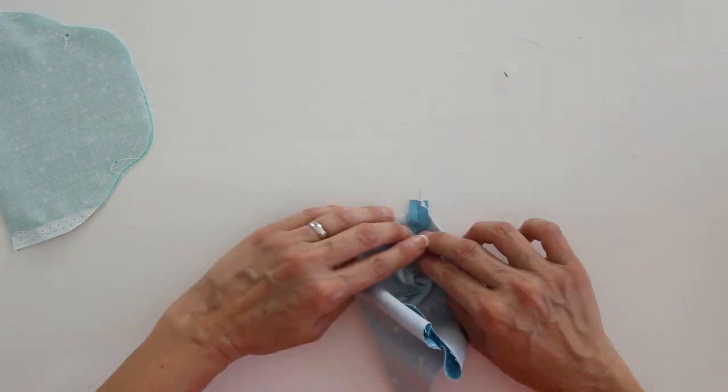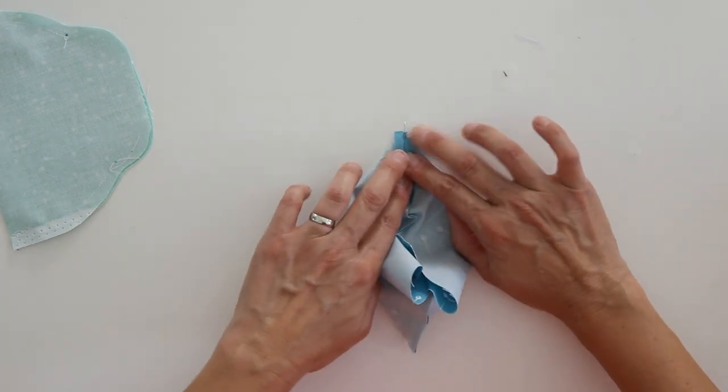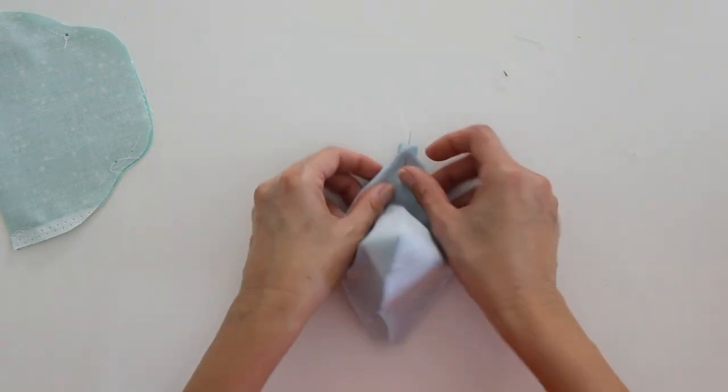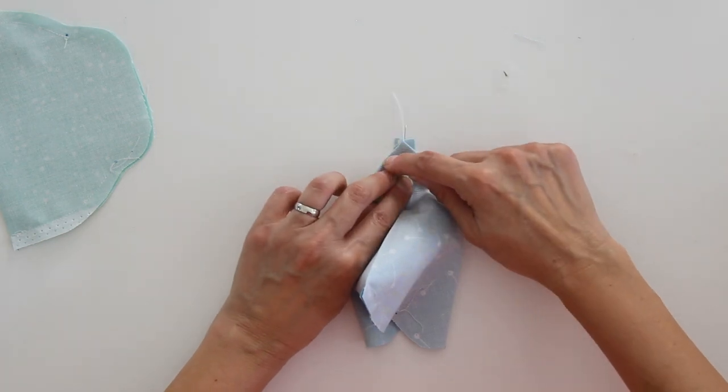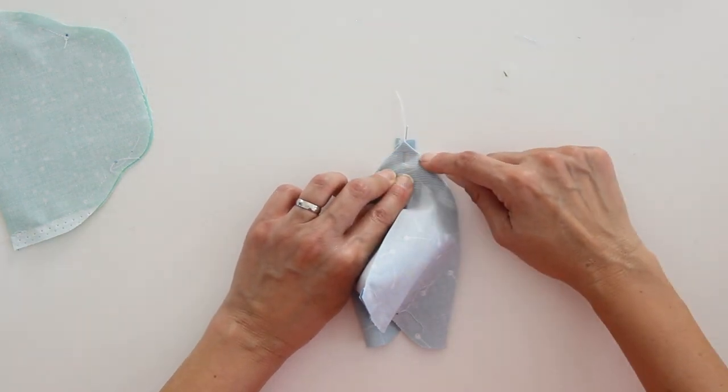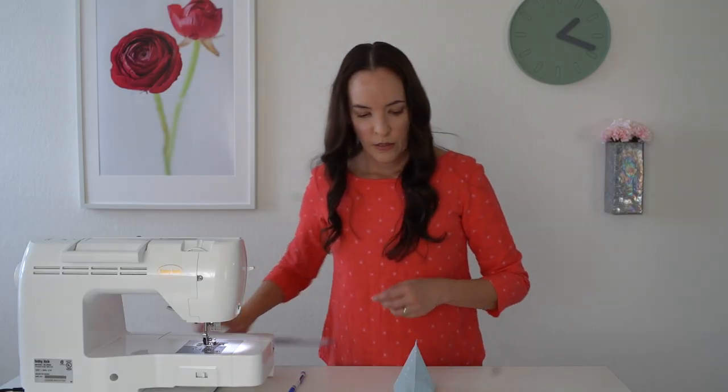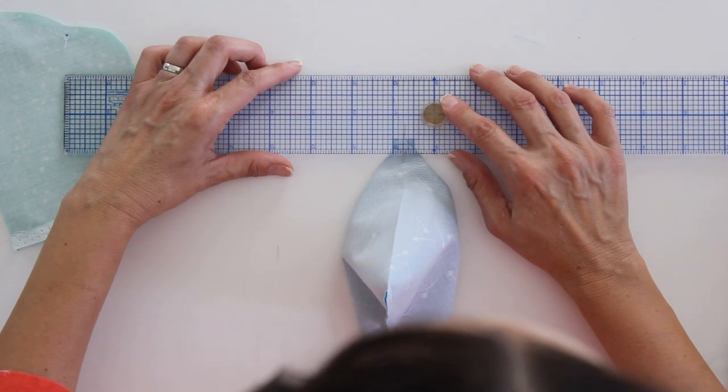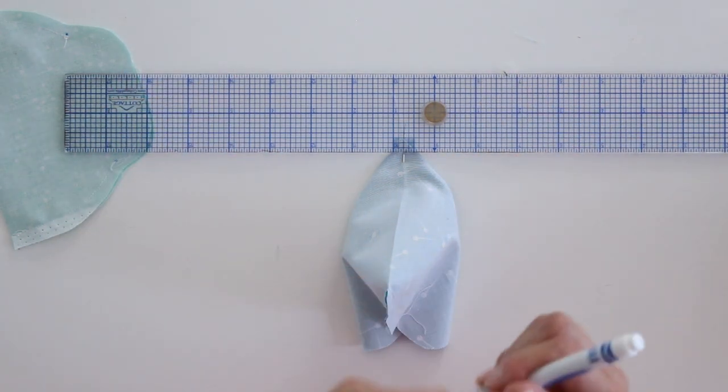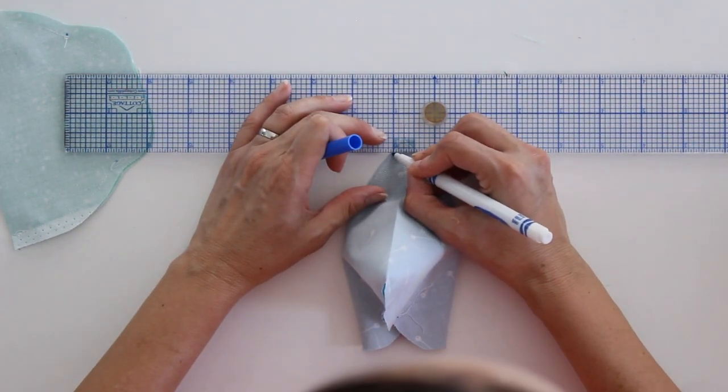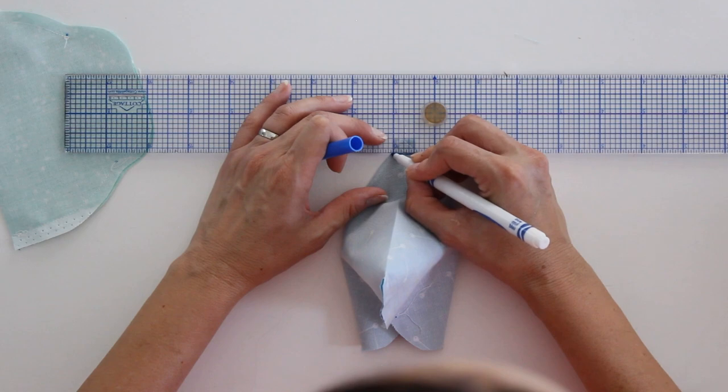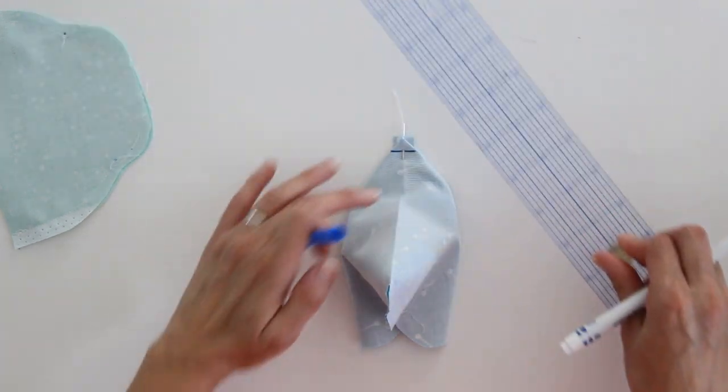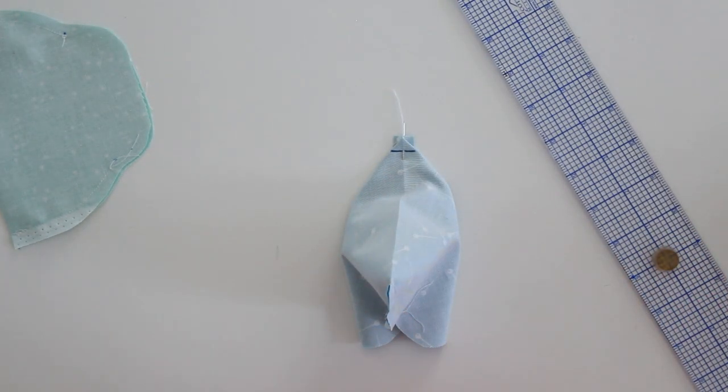And then, what I want to do is I want to mark half an inch from that point right there, half an inch down. I want to mark a line across. So I'm going to use my ruler, and I want to mark just half an inch across. Just like that. And I will repeat that on every corner.